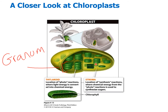We need to know about the thylakoids and the stroma because these are where the process of photosynthesis takes place. If we look at one thylakoid — one of those discs — and zoom in on it, we would notice small green circular dots on the thylakoid. Those are chlorophyll. That is why when you look at plants and their leaves, most of the time we see them as green.